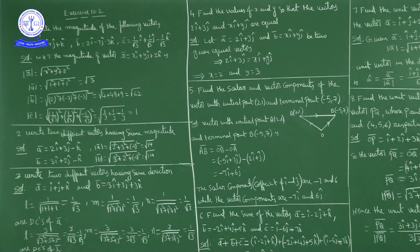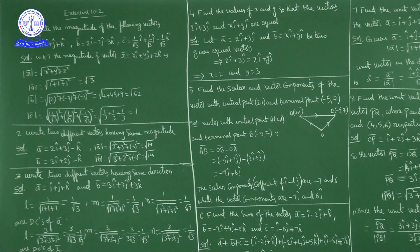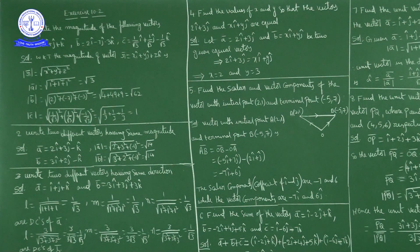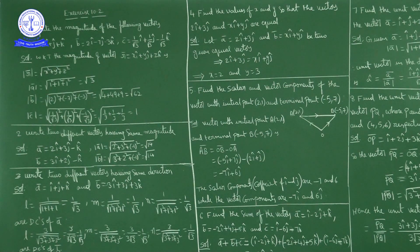Second question: write two different vectors having the same magnitude. Two vectors can have the same magnitude if the sum of the squares of the coefficients of î, ĵ, k̂ are equal. Suppose a̅ = xî + yĵ + zk̂, then b̅ can be written as yî − xĵ + zk̂ — the same coefficients in a different order.